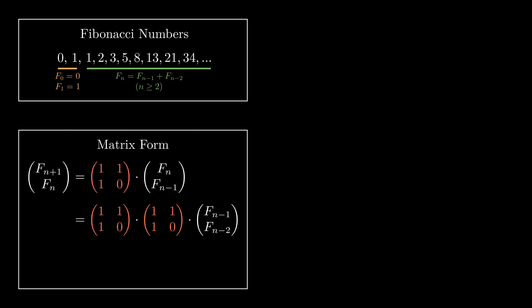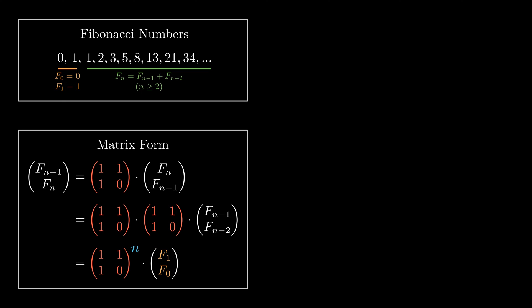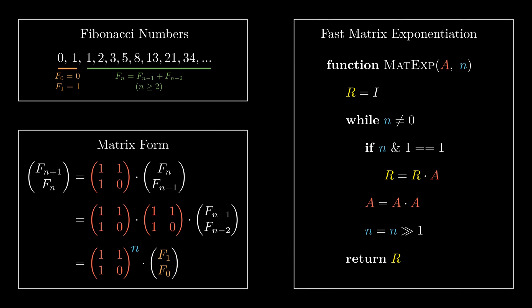We can continue doing this until we see that it is equal to the matrix to the power of n. Since F1 and F0 are known, we only need to calculate the matrix to the power of n to get the nth Fibonacci number. We can use the binary exponentiation algorithm to calculate the nth power of a matrix. Here is the binary exponentiation algorithm for matrices — it is basically the same as the algorithm for numbers, with the only difference being that we need to initialize R to be the identity matrix I. By applying the binary exponentiation algorithm to the matrix [[1,1],[1,0]], we can quickly calculate the nth Fibonacci number.